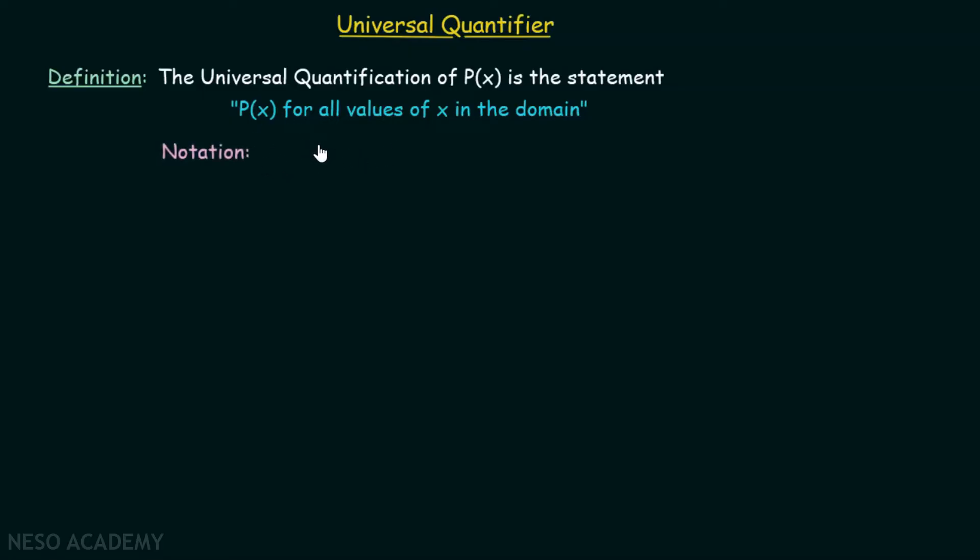So here is a simple notation that we will follow that denotes for all x, P(x). This symbol is called universal quantifier. This particular symbol is called universal quantifier. And here, this is the way we denote for all x, P(x). This is the way we read it.